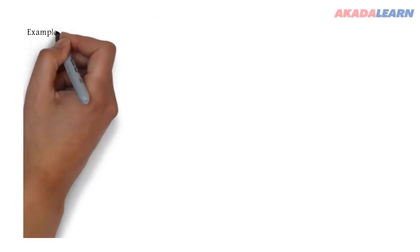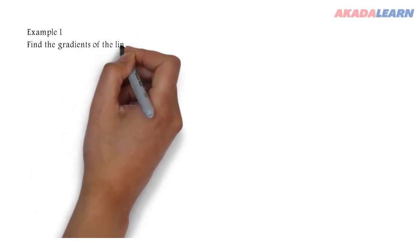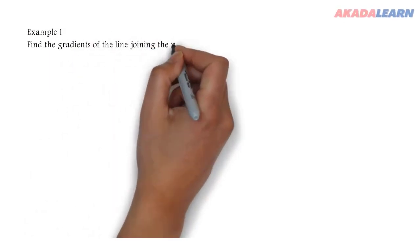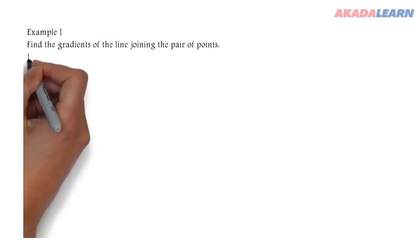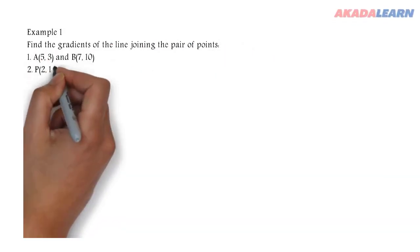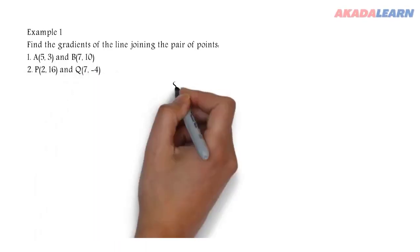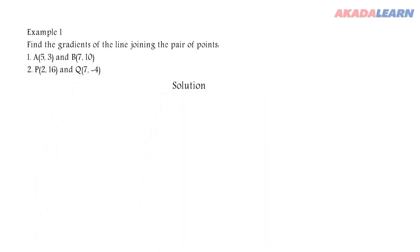Let's see an example. We are asked to find the gradients of the line joining the pair of points: A(5, 3) and B(7, 10), and P(2, 16) and Q(7, -4).